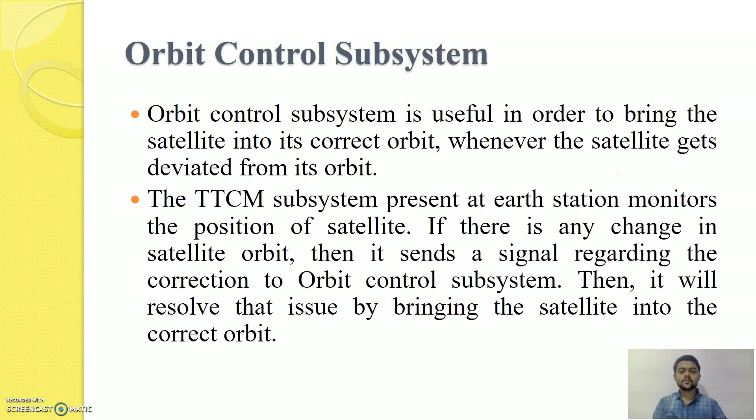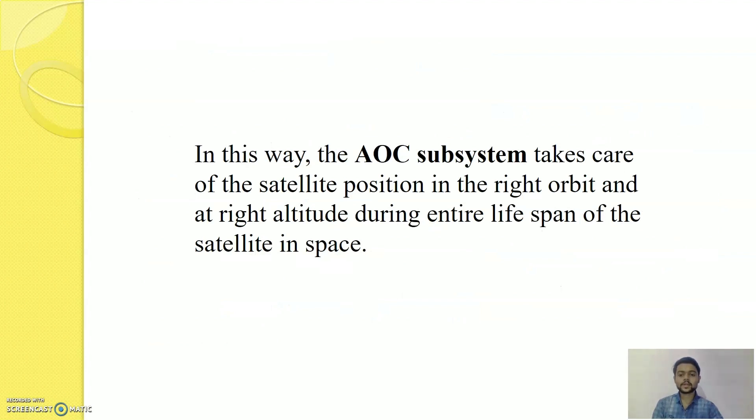Now we will study Orbit Control Subsystem which is useful in order to bring the satellite into its correct orbit whenever the satellite gets deviated from its orbit. The TTCM subsystem present at the earth station monitors the position of satellite. The TTCM subsystem is present in both satellite and at earth station. In general, satellite gets data through the sensors and telemetry subsystem present in the satellite sends this data towards the earth station. Therefore, TTCM subsystem is very much necessary for any communication satellite in order to operate it successfully. If there is any change in satellite orbit, then it sends a signal regarding the correction to Orbit Control Subsystem, then it will resolve that issue by bringing the satellite into its correct orbit. Therefore, TTCM subsystem plays an important role in bringing the satellite into its correct orbit. In this way, AOC subsystem takes care of the satellite position in the right orbit and at right altitude during entire lifespan of the satellite in space. Hence, AOC system is the most important part of the satellite communication system.